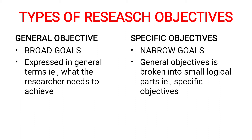Moving on to the types of research objectives: there are two types — general objectives and specific objectives. General objectives are broad goals, while specific objectives are narrow goals. General objectives are expressed in general terms — what the researcher needs to achieve as a whole, meaning the final outcome of the study.